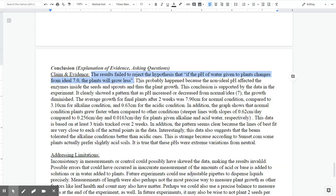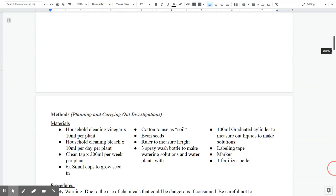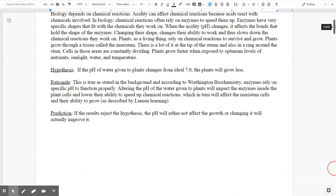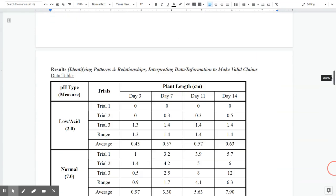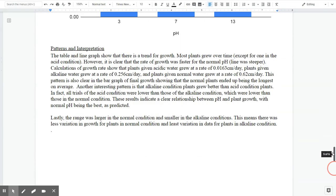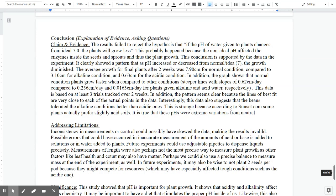The next statement says this probably happened because of the non-ideal pH affecting the enzymes inside the seeds and sprouts and thus the plant affects the plant growth. So if you see my rationale all the way at the beginning, it basically says the same thing. So I rehashed that for my conclusion section. If I had not gotten what I expected, I would have done some research, found out why I was wrong, or if I had some serious problems on my experiment, I would have referenced those.